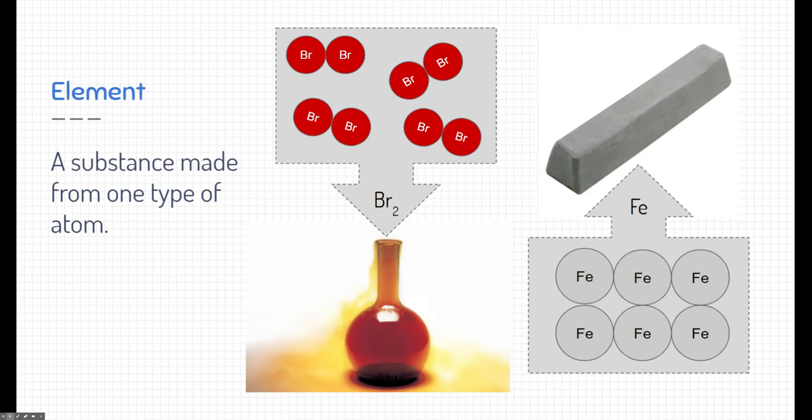On the right side, we have iron, a bar of iron. And again, if we were able to look very closely at the atoms, we can see that it's just iron atoms that make up this iron substance. So these are both made of elements.